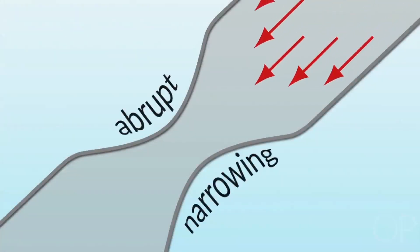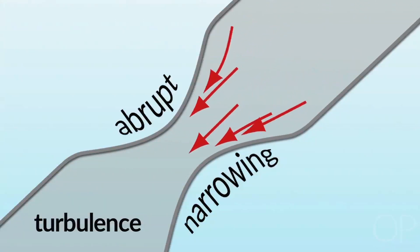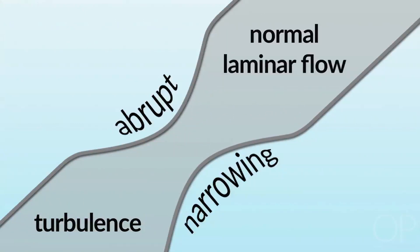With abrupt narrowing, complete separation of the stream profiles will occur and the center stream constricts to a minimal value. The resulting turbulence may not be able to resume normal laminar flow.